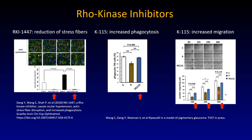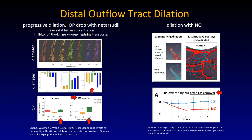We did not see the same migration effect with RKI1447 — studies are not necessarily directly comparable. Mixed effect on migration, let's just keep it that way. But there is something more interesting even happening: a dilation of the distal outflow tract that can be seen with Rho kinase inhibitors.